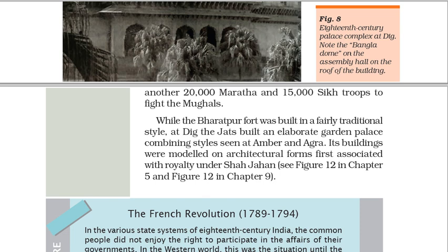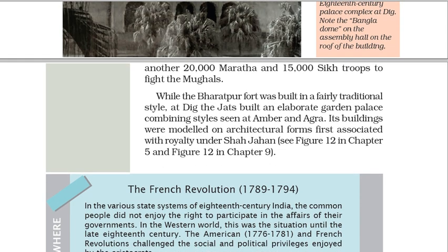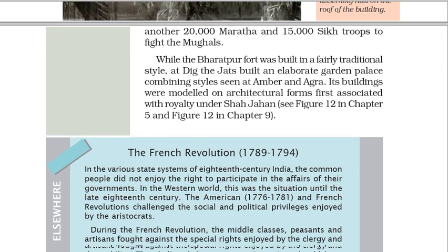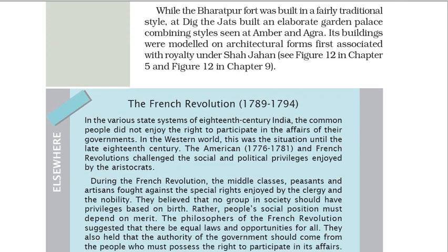While the Bharatpur Fort was built in a fairly traditional style, at Dig the Jats built an elaborate garden palace combining styles seen at Amber and Agra. Its buildings were modelled on architectural forms first associated with royalty under Shah Jahan.